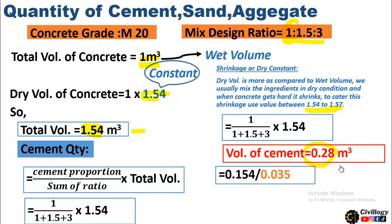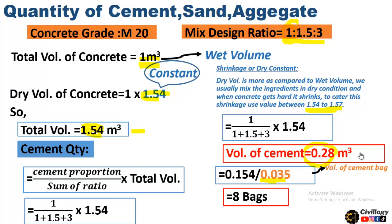Now to get the number of bags, we will divide this volume by 0.035, which is the volume of one cement bag. We will get the number of bags, which is 8 bags — which is a lot more. As I told you, this is rich concrete. The cement quantity is much more as compared to my previous videos, where the cement quantity was 3, 4 bags per 1 cubic meter. This is rich concrete and it contains 8 bags.